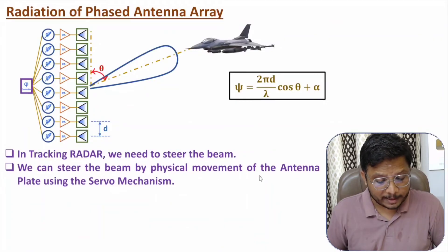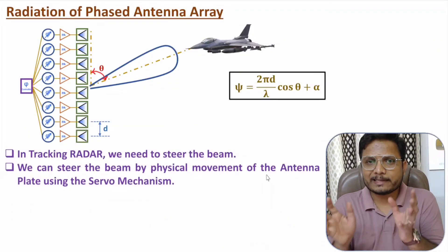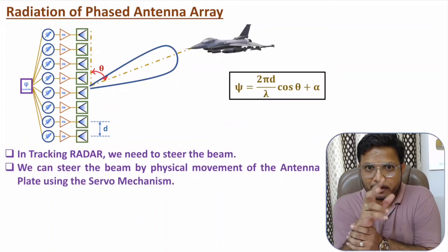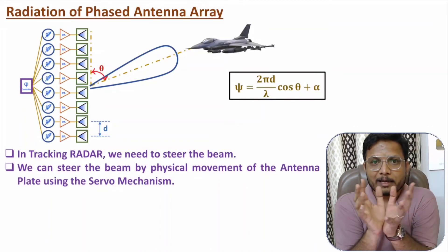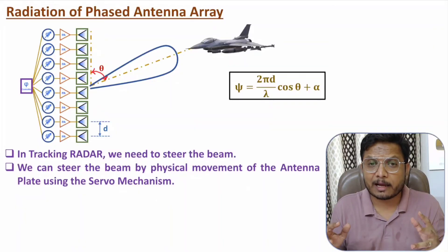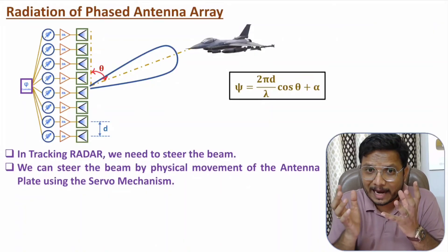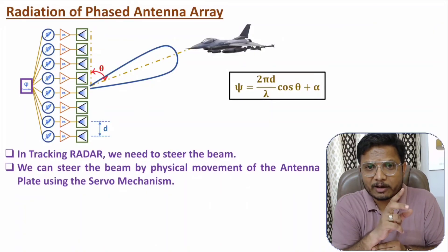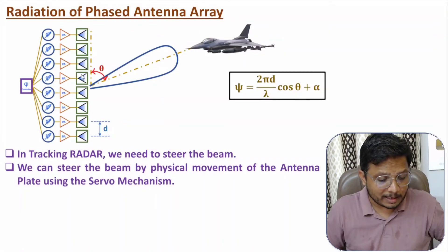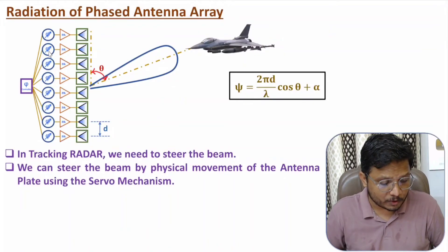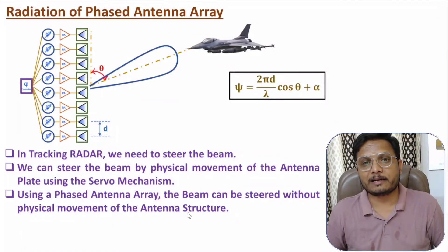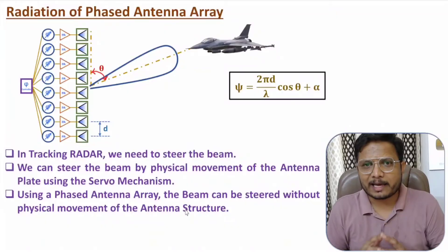We can steer the beam by physical movement of antenna — for example, a parabolic dish antenna can be physically moved to steer its beam. However, for large-size antennas, servo motors are needed for precise tracking, which is difficult. That can be achieved using phased antenna array, where steering is controlled by changing phase shift electronically — the beam can be steered without physical movement of the antenna structure.